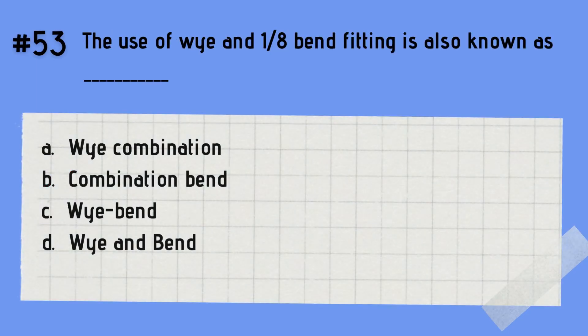Question 53: The use of a Y and 1/8th bend fitting is also known as what? A. Y combination. B. Combination bend. C. Y bend. D. Y and bend. The answer is A — Y combination. The use of a Y and 1/8th bend fitting is also known as Y combination.